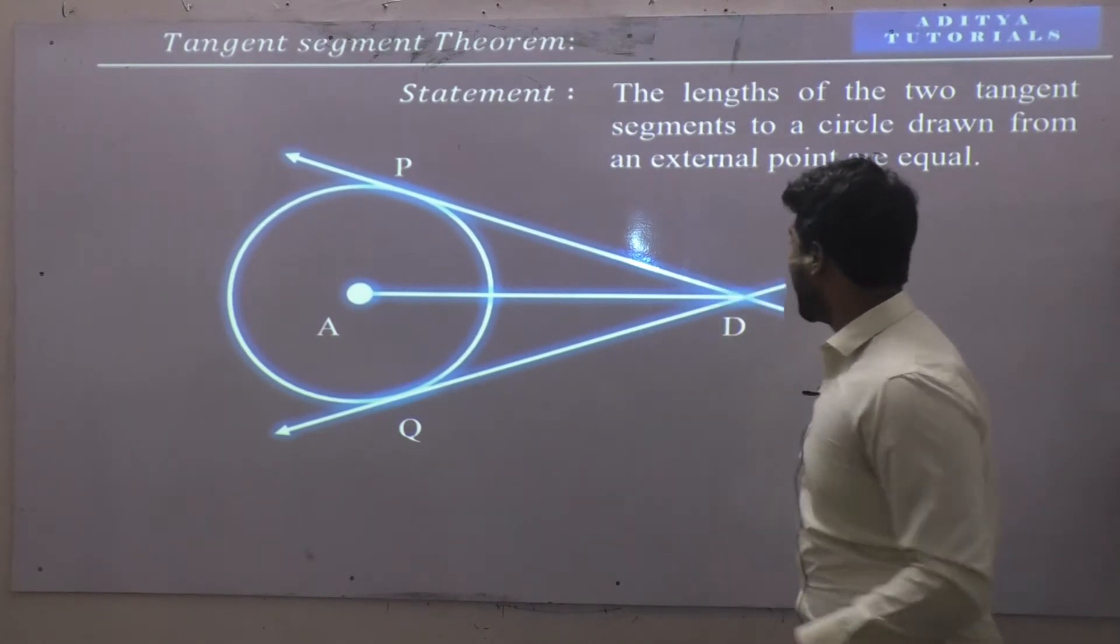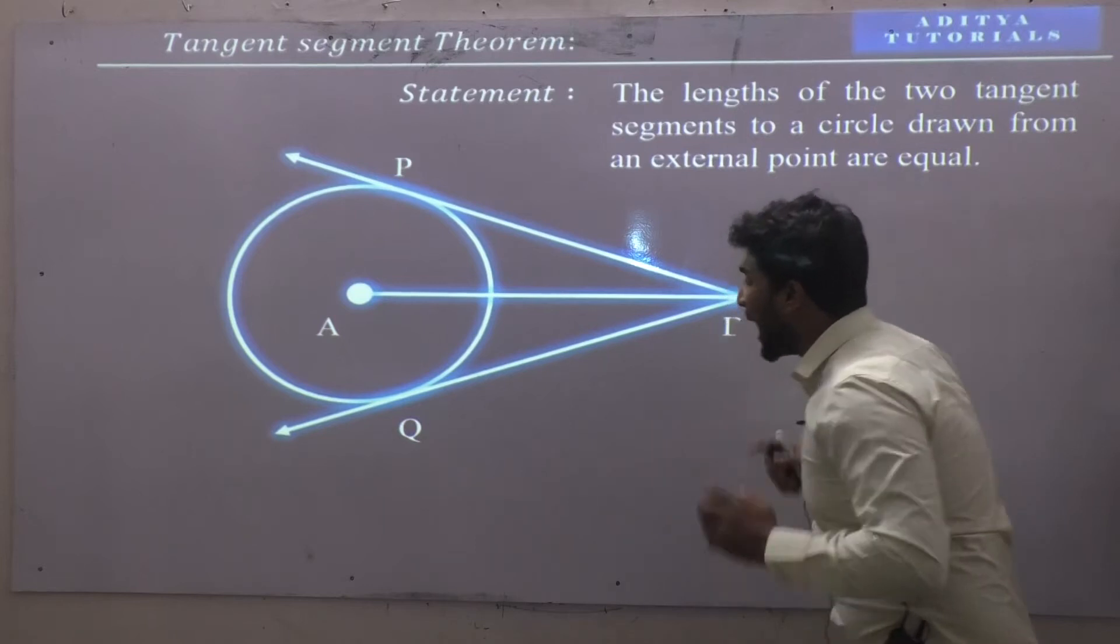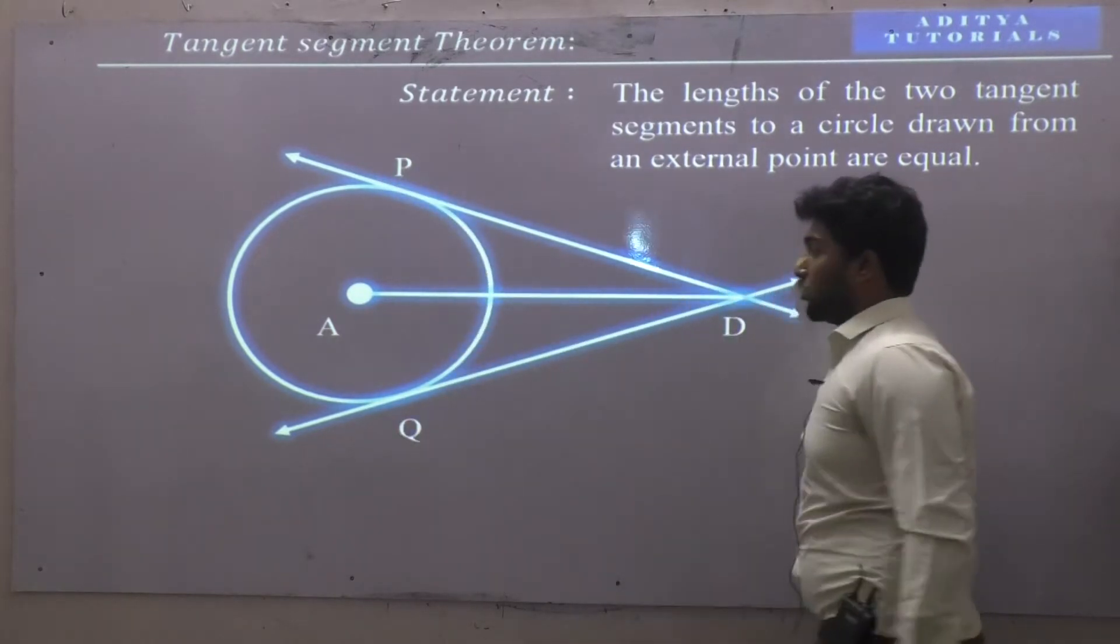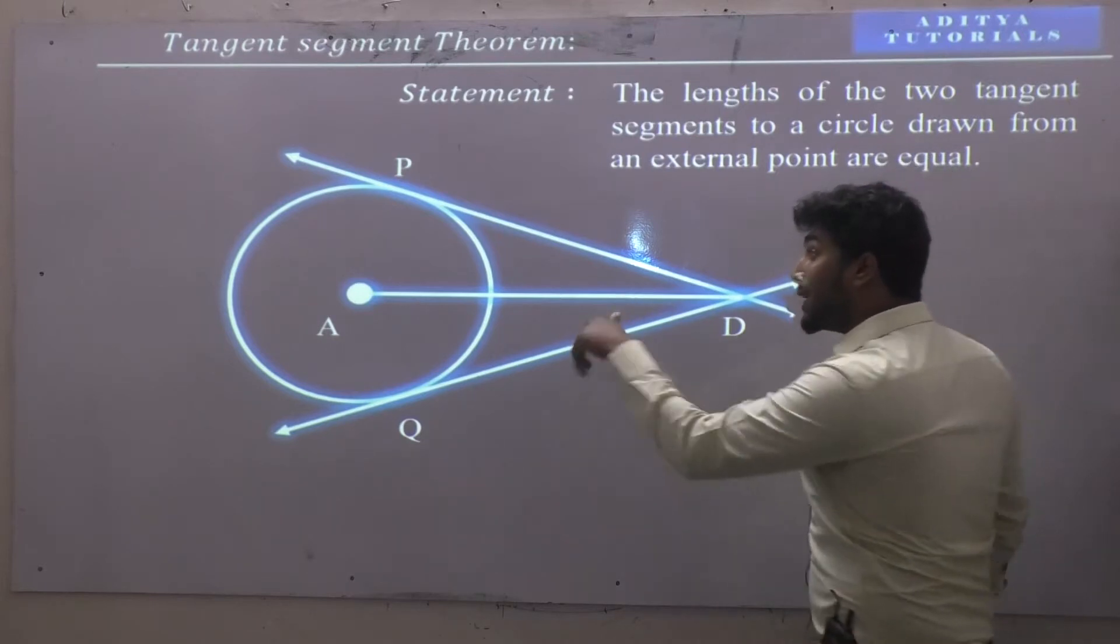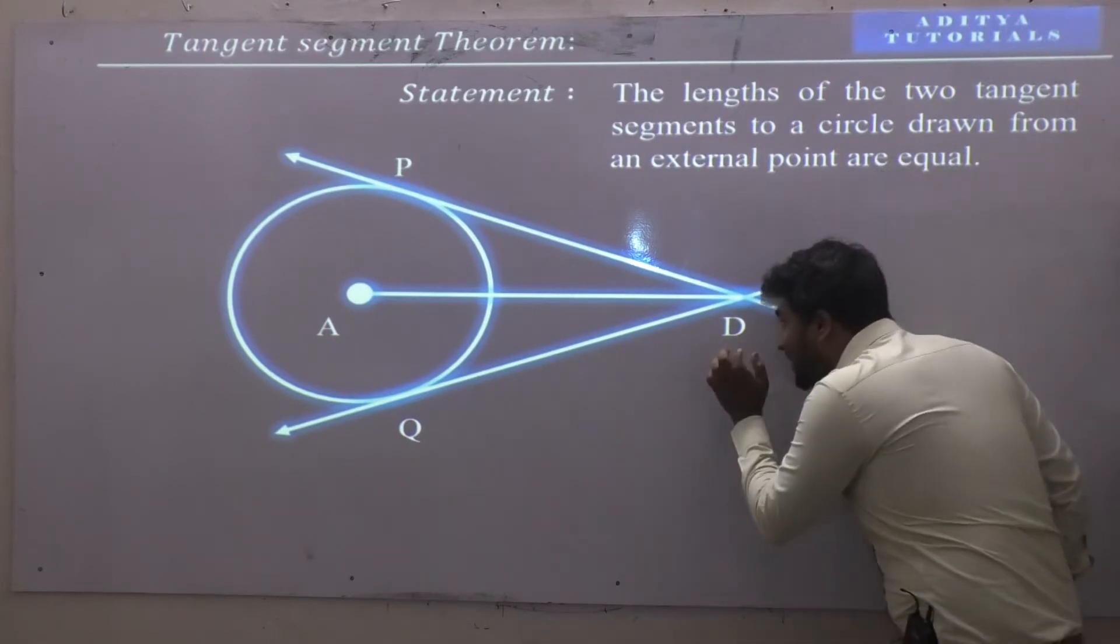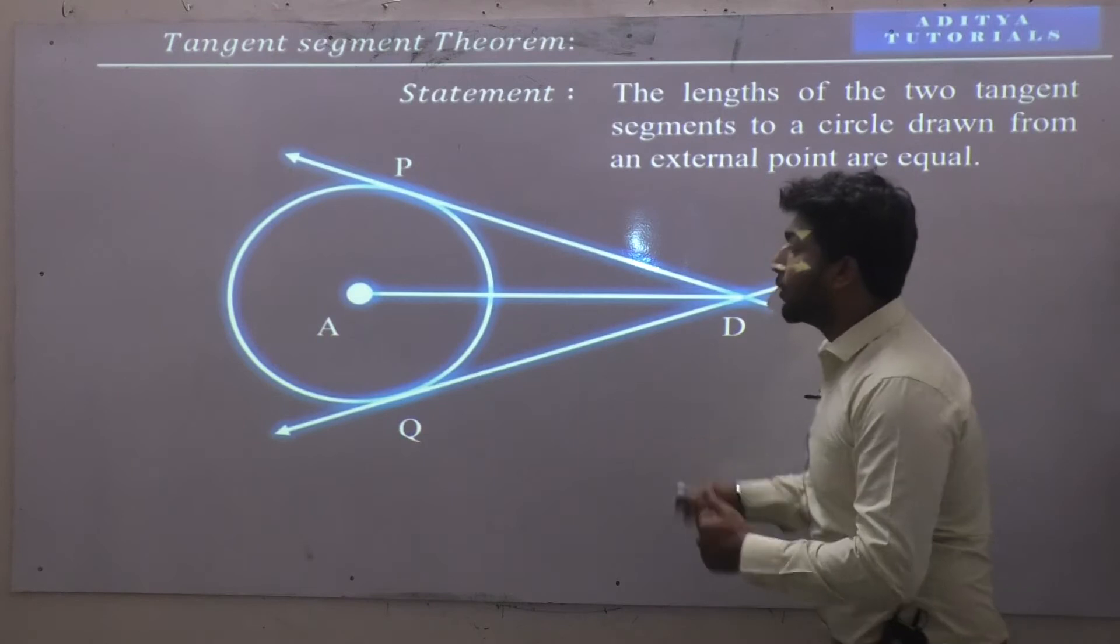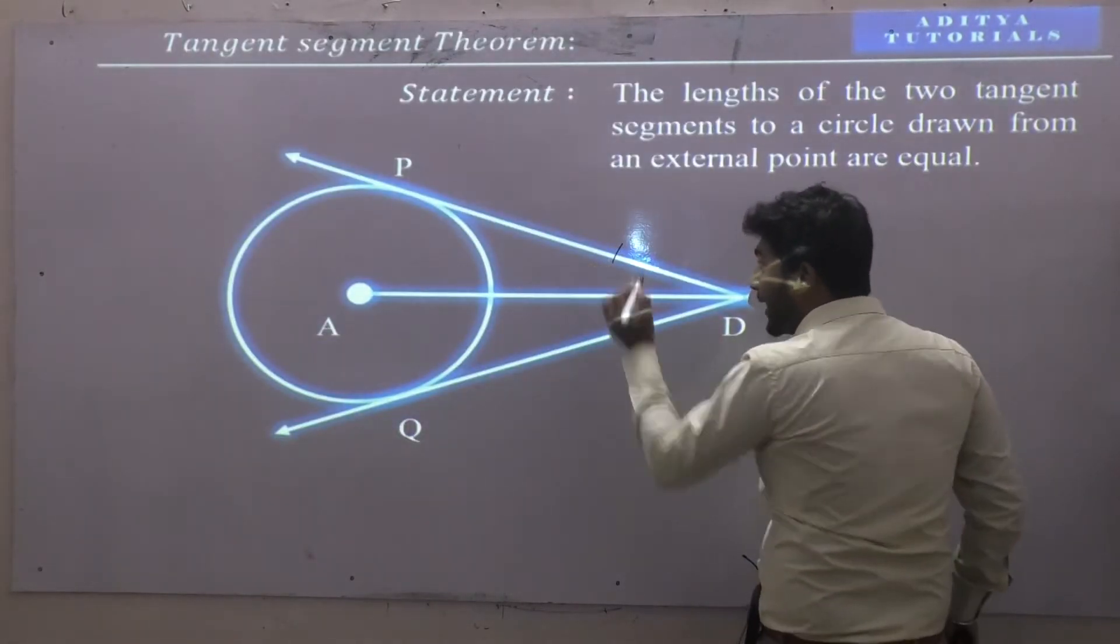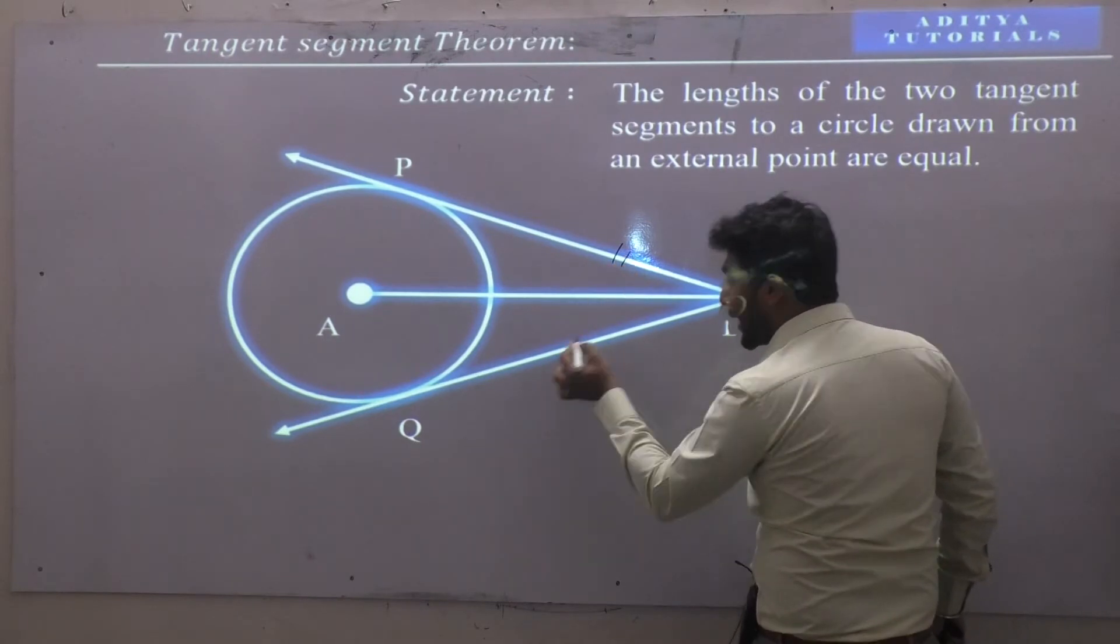We need to prove that the length of two tangent segments, that is, length of PD and length of DQ to a circle drawn from an external point are equal. I mean, we have to prove that PD is equal to DQ.